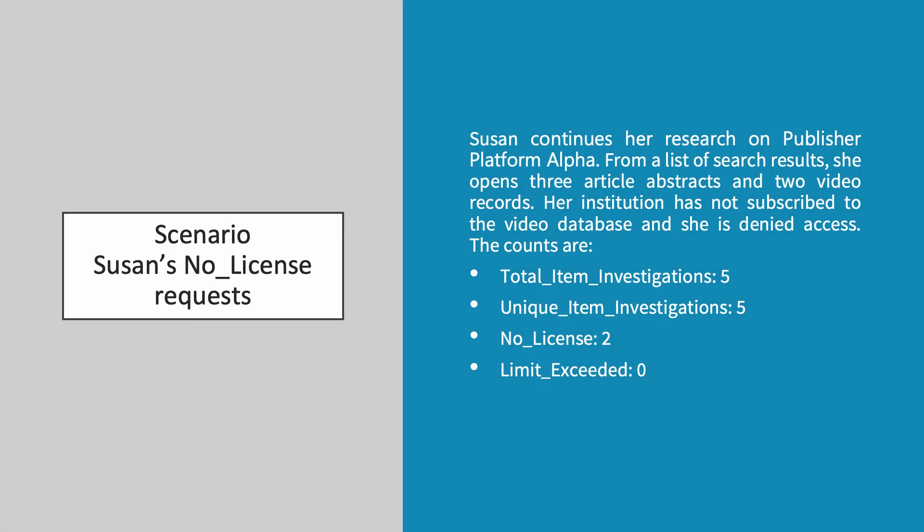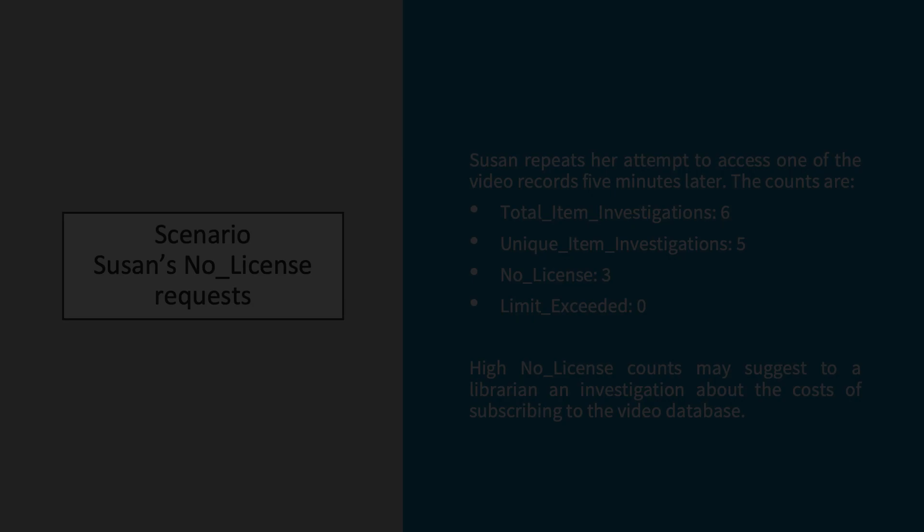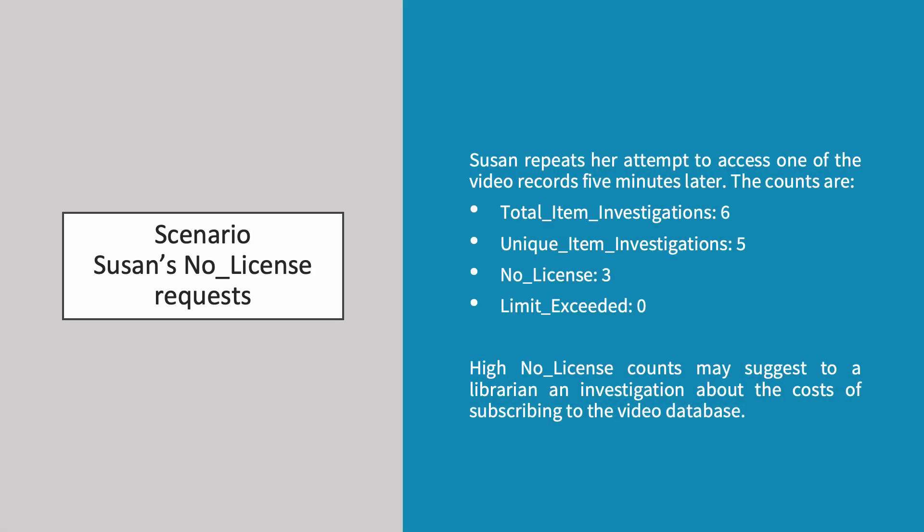Susan continues her research on publisher platform Alpha. From a list of search results, she opens three new article abstracts and two video records. Her institution has not subscribed to the video database and she is therefore denied access. The counts are 5 total item investigations, 5 unique item investigations, 2 no license and 0 limit exceeded. Susan repeats her attempt to access one of the video records five minutes later. The counts are now 6 total item investigations, 5 unique item investigations, 3 no license and still 0 limit exceeded.